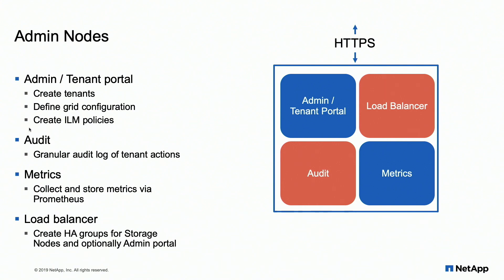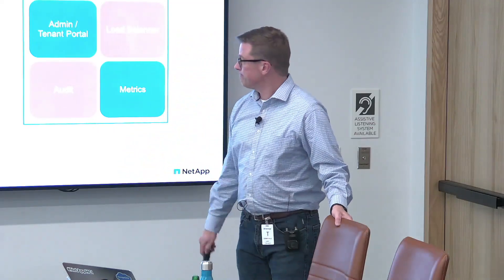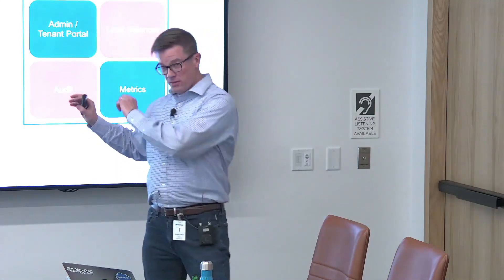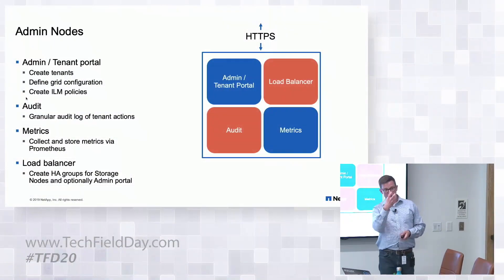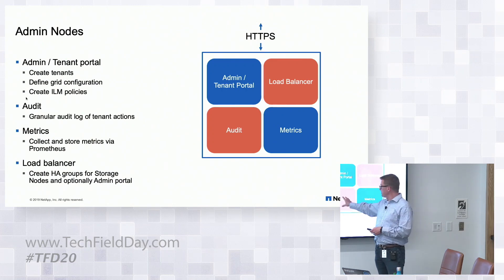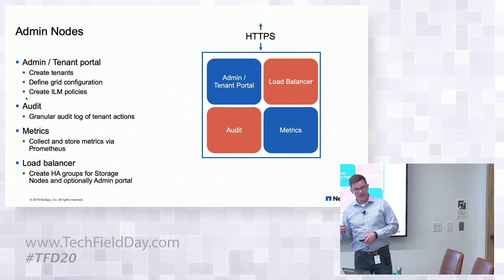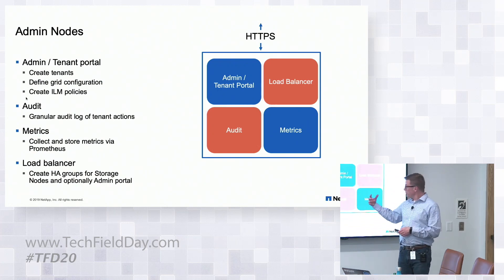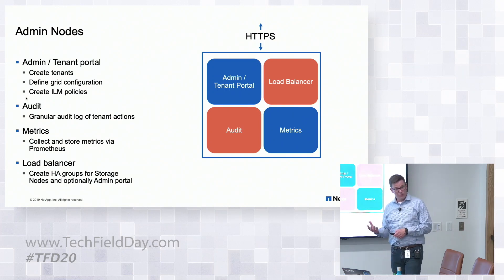Are you planning to integrate Storage Grid with Active IQ? Yes, we are planning to do more with that. You can actually look at our UI, look at those Grafana charts, and steal a query to put into something else. The admin node also contains the load balancer service to create an HA group. You can deploy the load balancer on the admin node, and if you need more throughput or more connections, you can deploy more instances of just the load balancer.